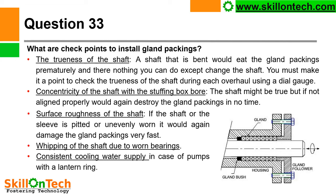What are the checkpoints to install gland packings? The first is the trueness of the shaft. You can see a picture where the shaft, housing, gland packings, gland follower, and bolt are shown. This bolt is used to tighten the gland follower to give tightness to the gland packings. A shaft that is bent would eat the gland packing prematurely and there is nothing you can do except change the shaft. You must make it a point to check the trueness of the shaft during each overhaul using a dial gauge. You can put a shaft in a V block, provide a dial gauge, rotate the shaft and check whether it is bent or not. If your shaft is bent, then you have to replace it; otherwise your gland packing will wear out very fast.